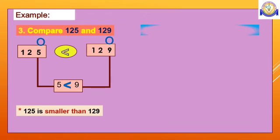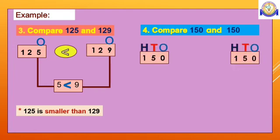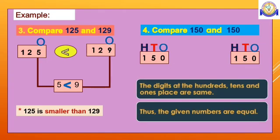Now, in last example, compare 150 and 150. The digits at the hundreds, tens and ones place are same. Thus, the given numbers are equal.